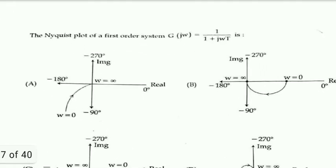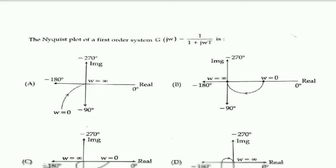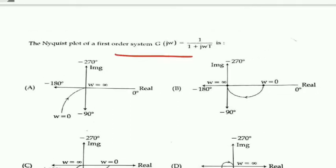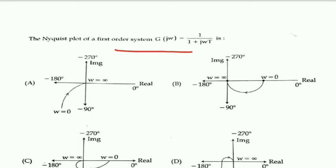Next: the Nyquist plot of the first-order system given by G(jω) = 1 / (1 + jωT). They ask what the Nyquist plot looks like for this first-order system. We must know the general rules for Nyquist plots — let's review them.